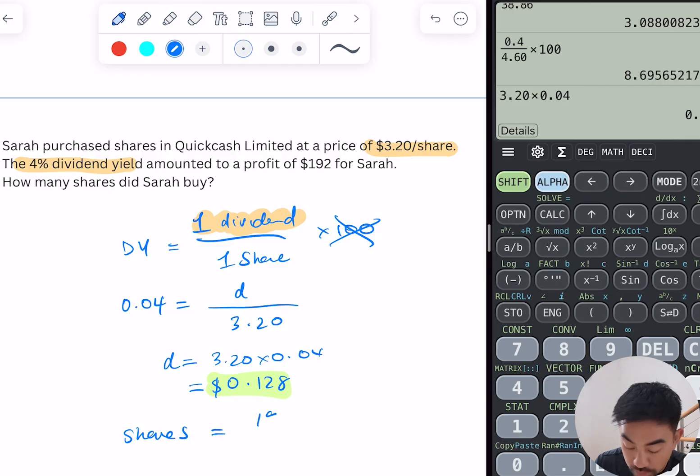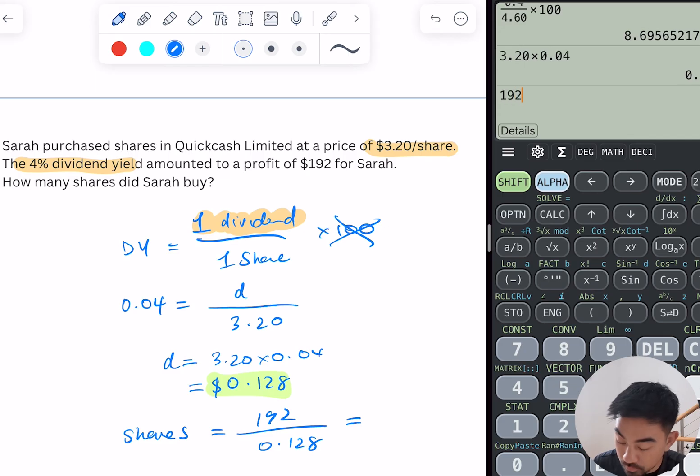So she has 1500 shares. Okay, so just think through that properly. The dividend she's getting is $192. Now she gets 0.128 dollars for every share she owns, so therefore the number of shares she owns has to be 192 divided by 0.128, so that's gonna be 1500 shares.